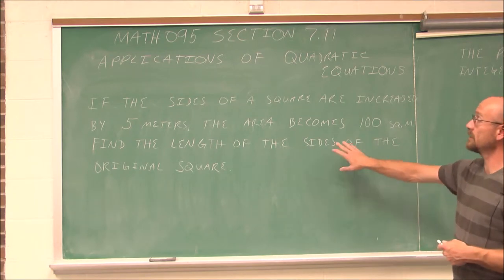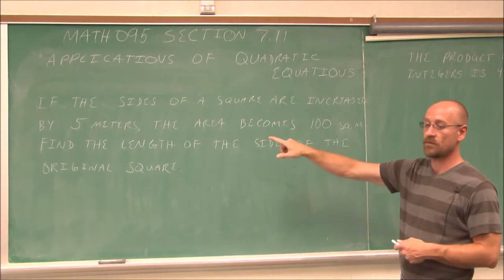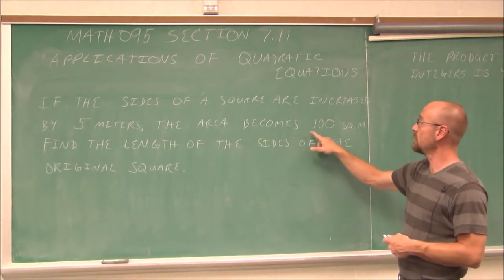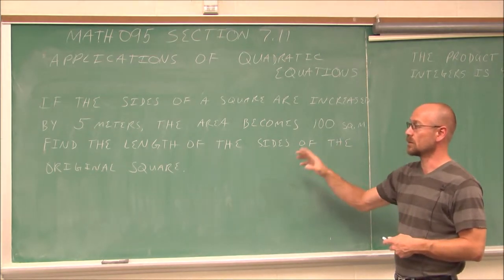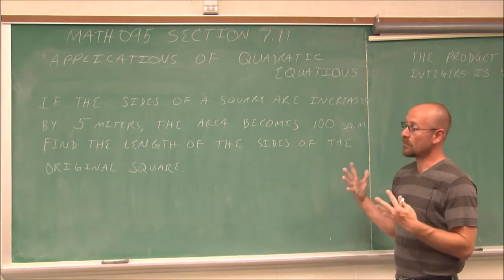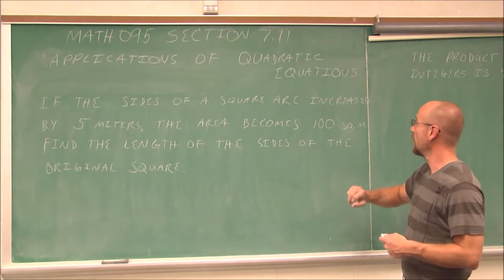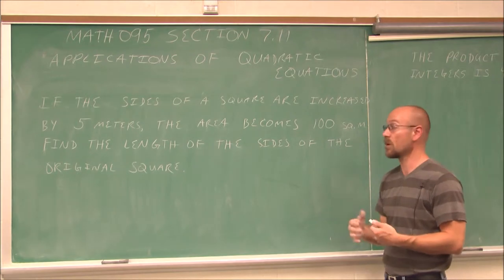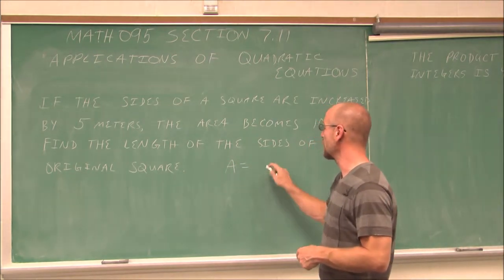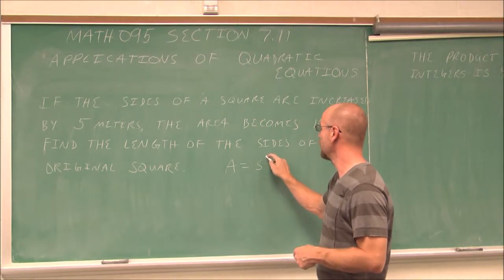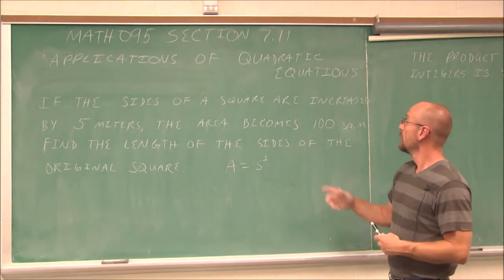The first application says: if the sides of a square are increased by 5 meters, the area becomes 100 square meters. Find the length of the sides of the original square. I'm familiar with the terminology — I know what a square is and what area is, and I need a formula for that. The area of a square is a side squared, because all sides are equal — one side times the other.